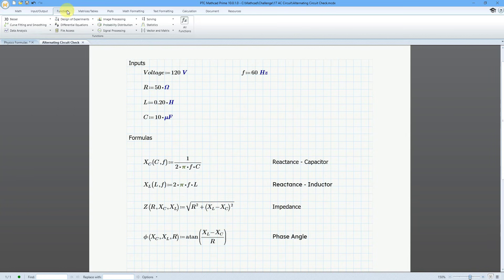But recently we had a community challenge involving alternating circuits. Here were the input values for voltage, resistance, inductance, capacitance, and the frequency of the alternating current.